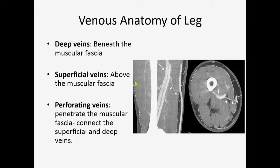The venous anatomy of the leg consists of the deep veins — the femoral veins — and the muscular fascia is the layer which really separates those two. This is a CT venogram: that's the muscular fascia, this is the deep vein, and then you have the superficial vein on top of the muscular fascia on cross-section and longitudinally, and you have these perforating veins which connect these two primarily.